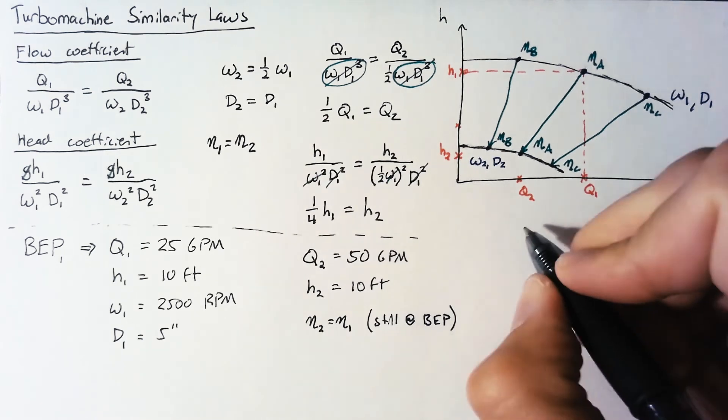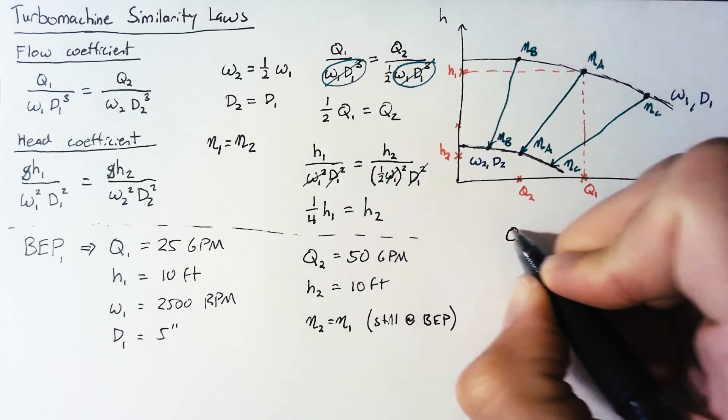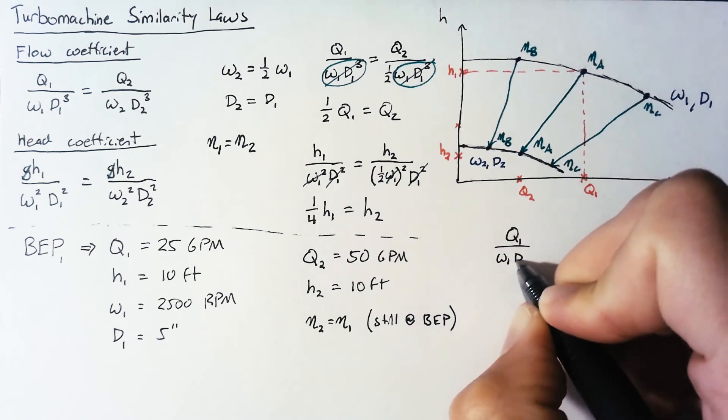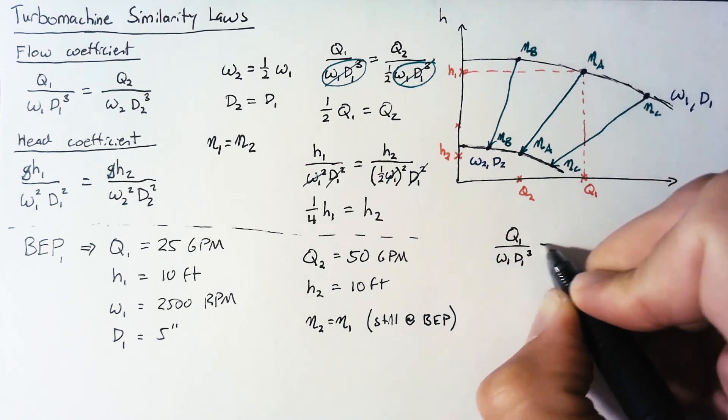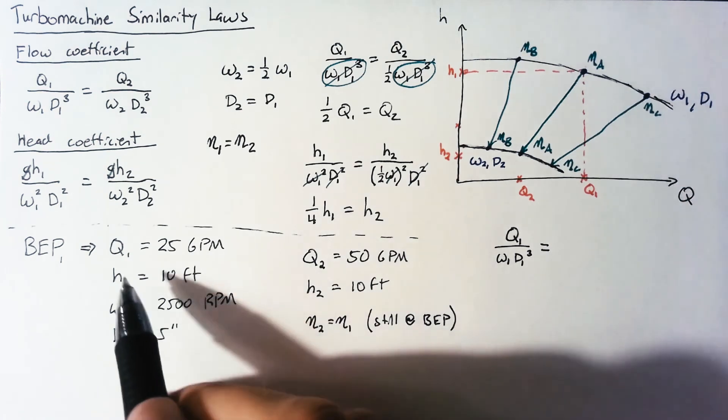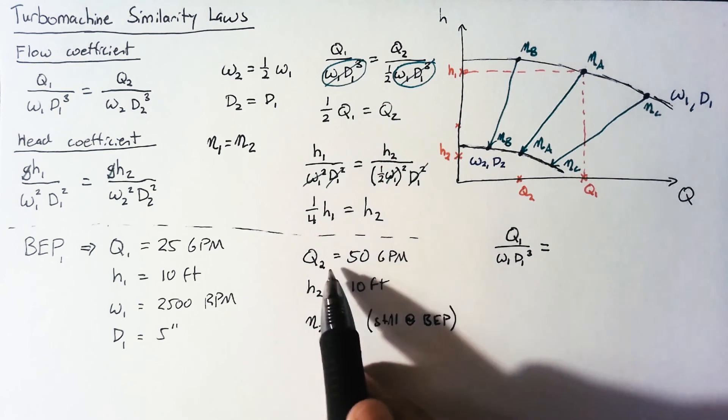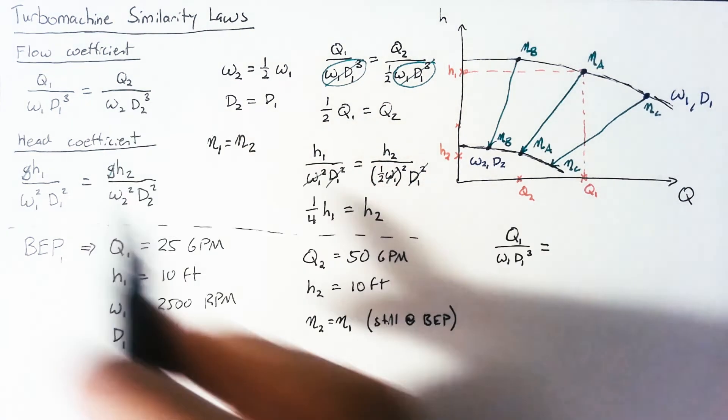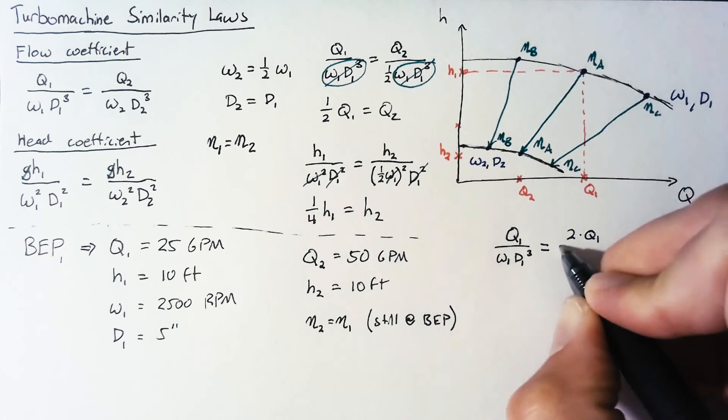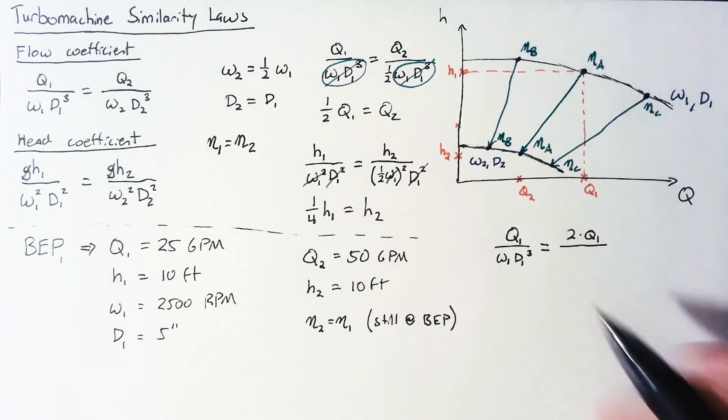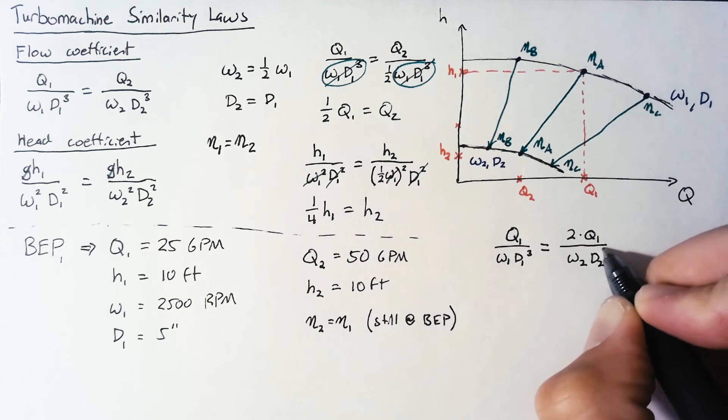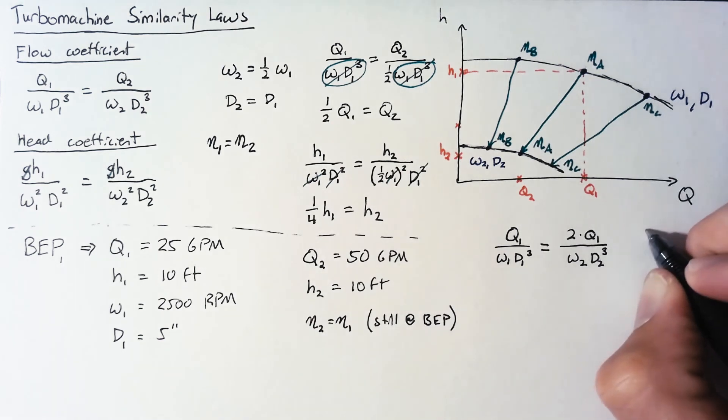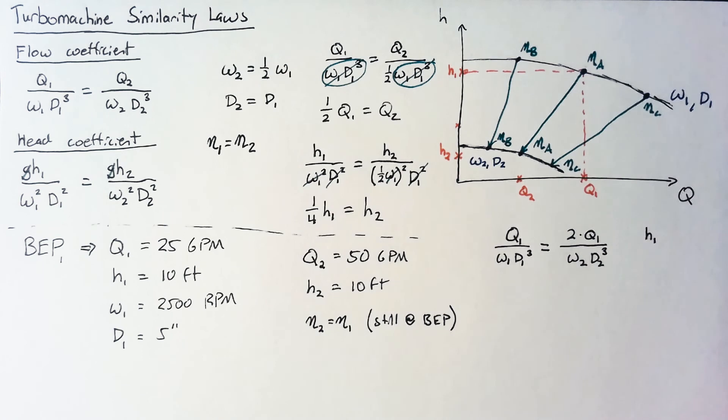So how do we go about doing this? We're going to write out our flow coefficient and our head coefficient and we're going to do the same thing we did before where we substitute the things that we know. So our Q2 is exactly equal to twice Q1 so we can say that this is just 2 times Q1 but we don't know what our omega 2 and D2 are so we have to leave those as is. And then of course we also need our head coefficient so for our head coefficient our head is the same but again we don't know what the new omega and D are so we have to leave those as is.